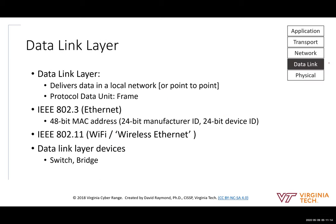The next layer up is the data link layer, which provides for point-to-point communications. The protocols used at the data link layer are Ethernet — when I have a cable plugged into my computer connected to a switch — and Wi-Fi for wireless. The primary protocols for data link layer communication are Wi-Fi and Ethernet. The devices used at the data link layer are switches, and you might have multiple computers connected directly to a switch.